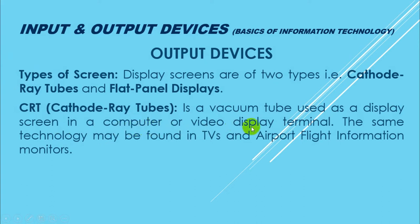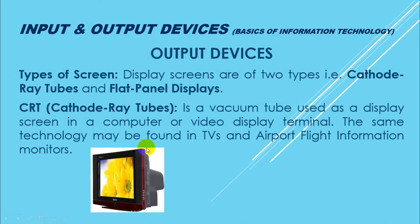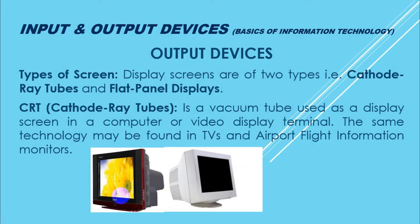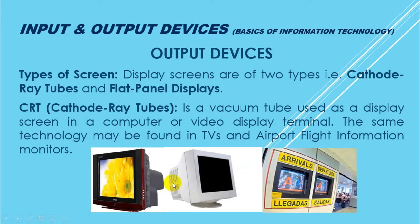CRT: Cathode tube is a vacuum tube used as a display screen in a computer or video display terminal. The same technology may be found in TVs and airport flight information monitors. Cathode tube actually ek vacuum tube hoti hai. Yeh screen ke peeche vacuum tube place kar di jaati hai jo system se aane wale electrical signals ko ek beam ki surat mein monitor ki screen pe andar bombard karti hai. Iski back side thodi badi hoti hai kyunki iske peeche cathode tube lagi hoti hai, aur airports ki flight information ke monitors mein bhi CRTs lagi hoti hain.